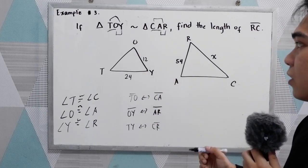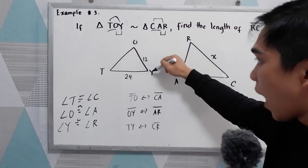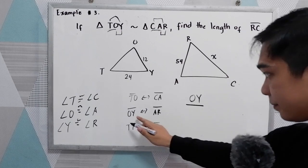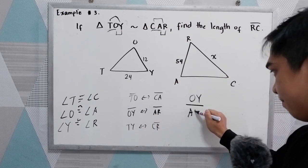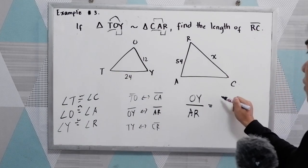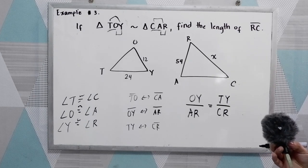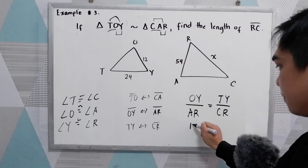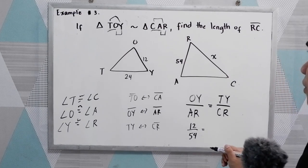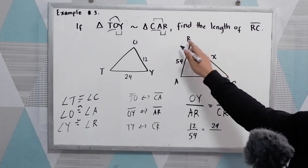Now, study the given. We have the given measures for OY and TY. We set up the proportion: OY over AR equals TY over CR. Substituting our given values: OY is 12 over AR is 54, equal to TY is 24 over CR, which is X.